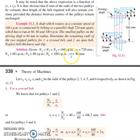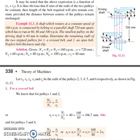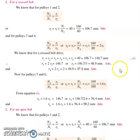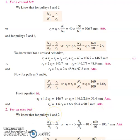The radius of the smallest pulley on the driving shaft is 40 mm. With these different speeds and data, we need to find the different radii both for crossed belt and open belt conditions. For pulleys 1 and 2, the formula is: n2/n1 = r1/r2.